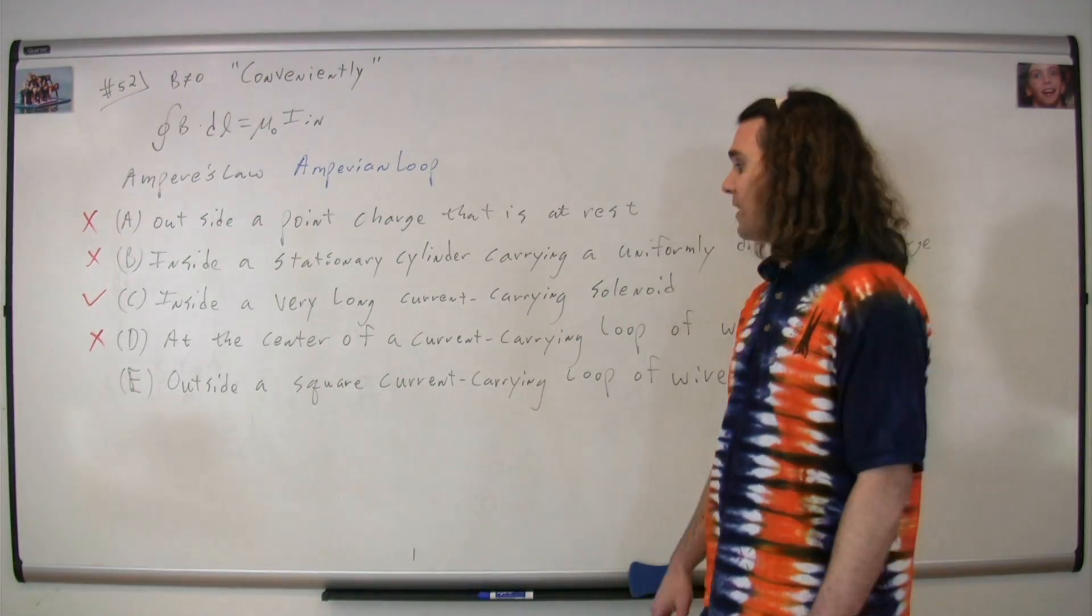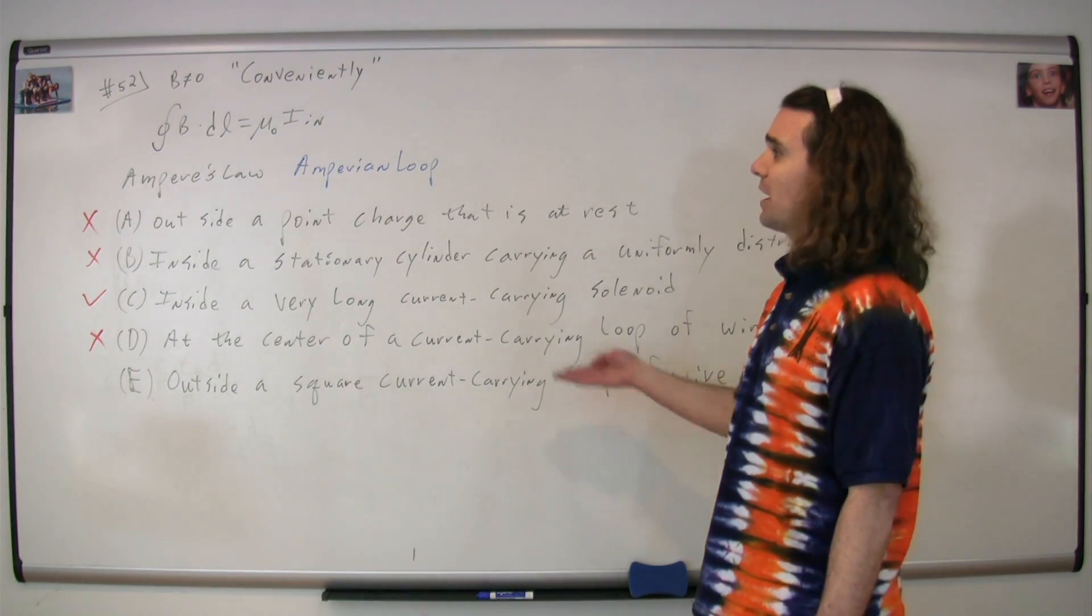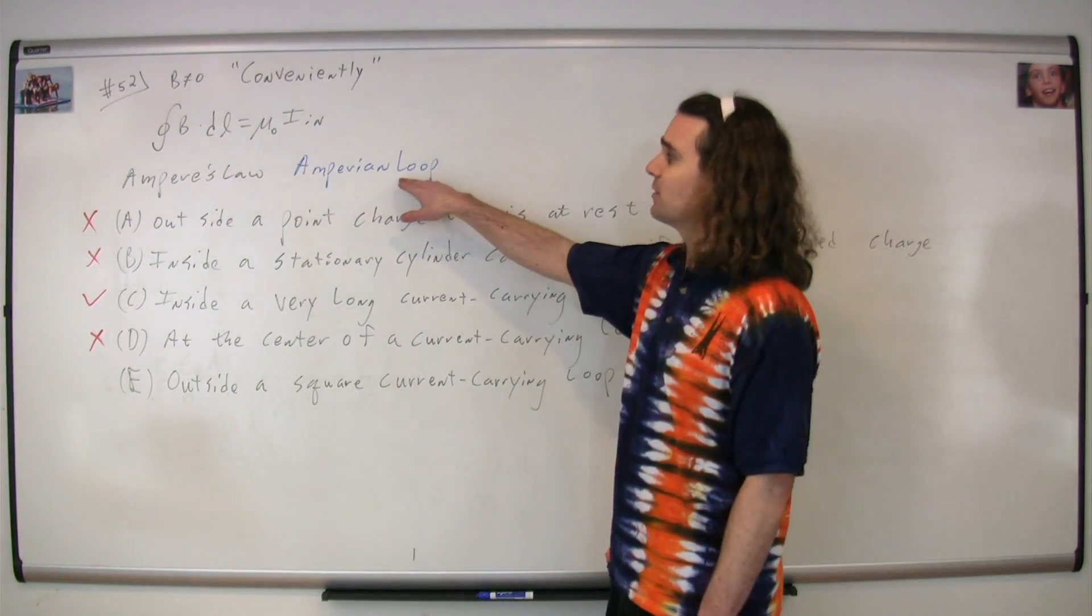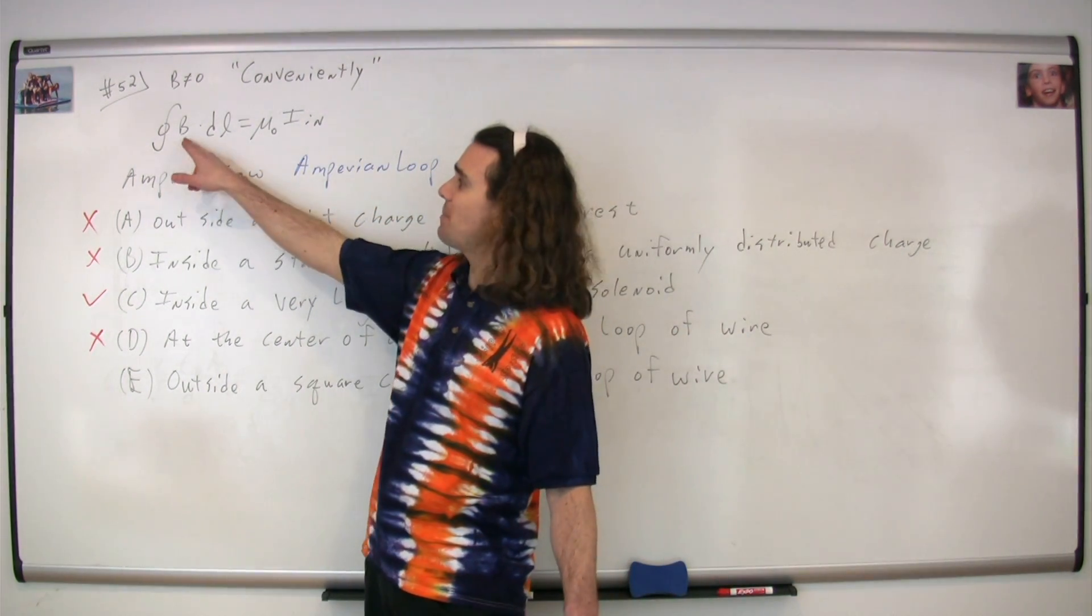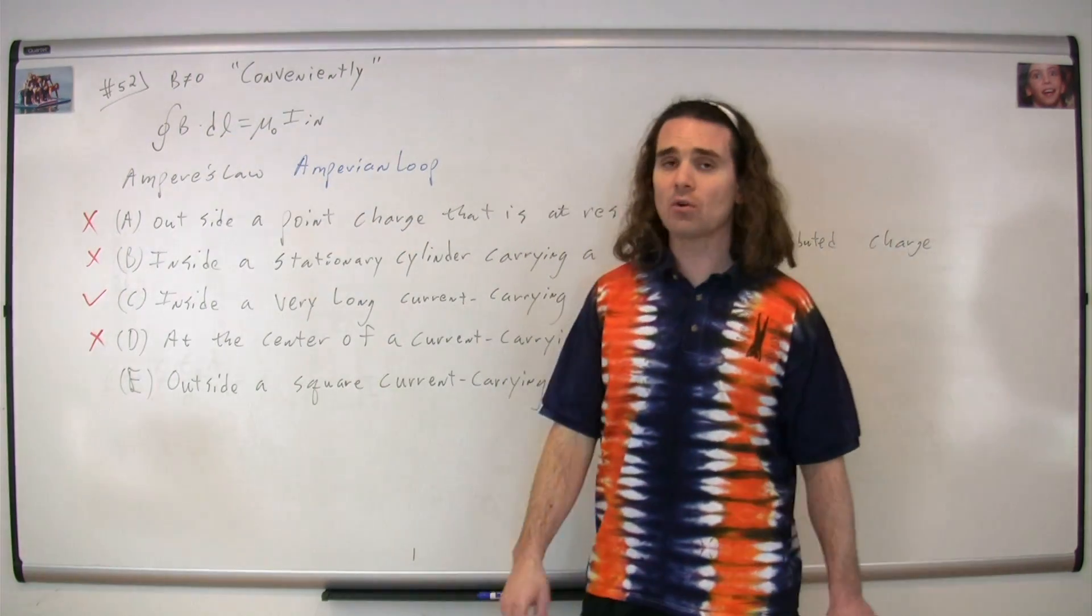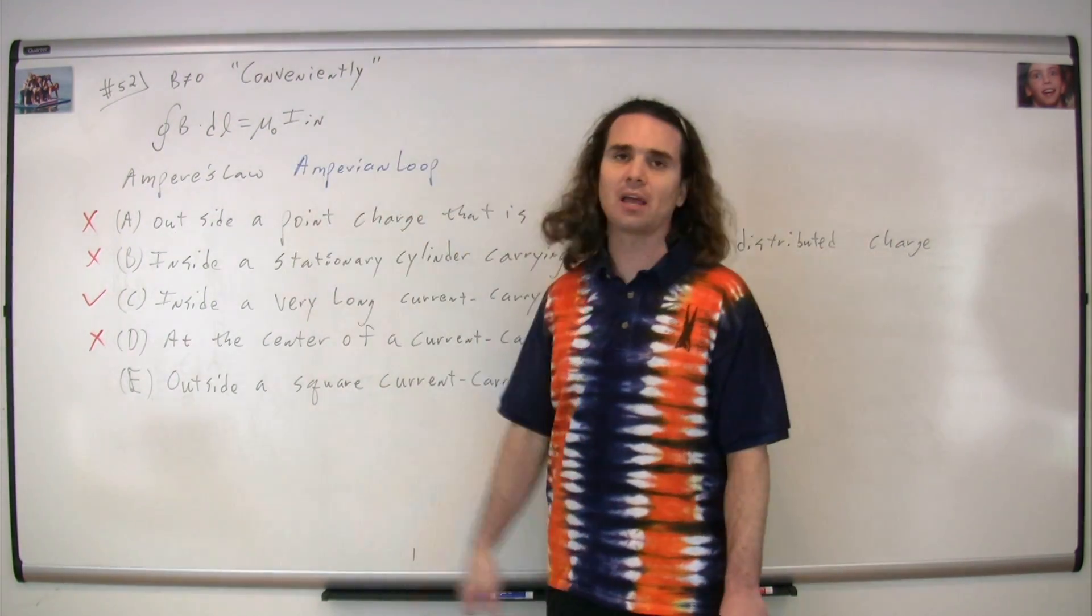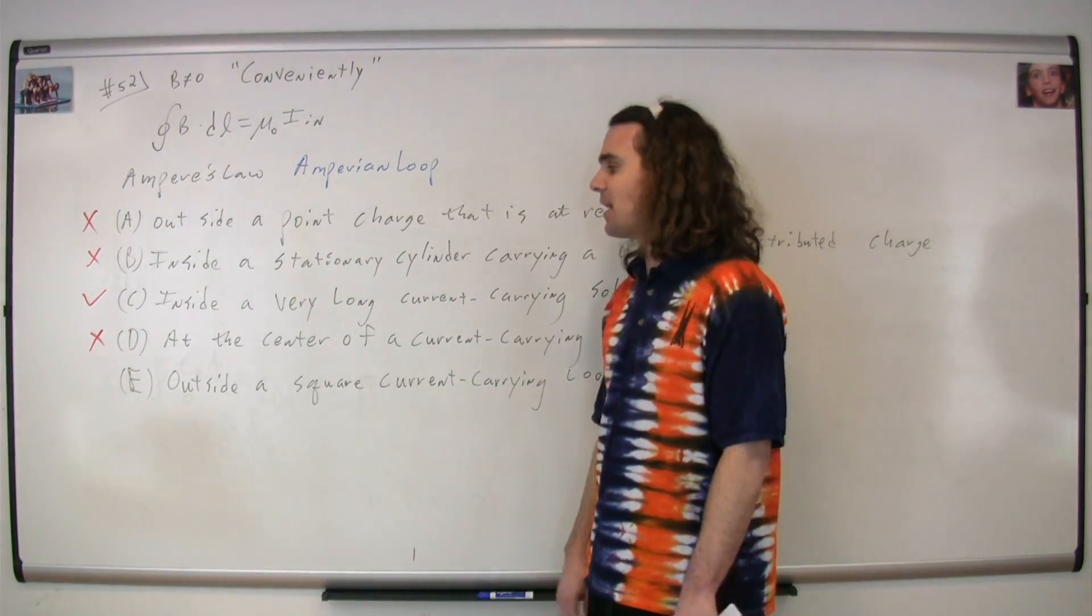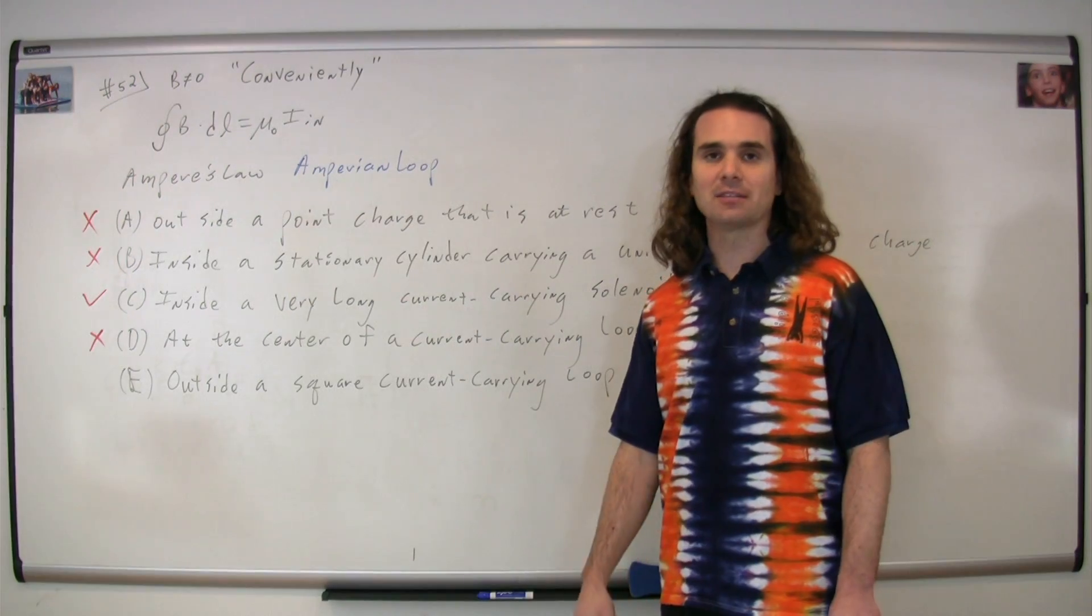As far as E, outside a square current carrying loop of wire, in order to use Ampere's law, you have to be able to set up an Ampere loop. And when you do so, that magnetic field needs to be constant. And the angle between the magnetic field and the wire itself needs to either be zero or 90 degrees in order to conveniently use Ampere's law. And you cannot find an Ampere loop outside a square current carrying loop of wire where that is the case. So E is also not correct.